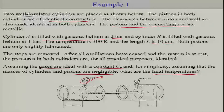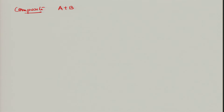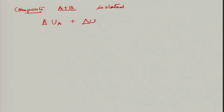This composite is well insulated, so whatever changes occur in the internal energy remain within the system — there is no transfer of energy through any boundary. If we consider the composite A plus B as isolated, then delta U_A plus delta U_B equals zero.